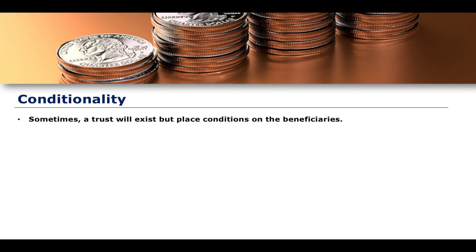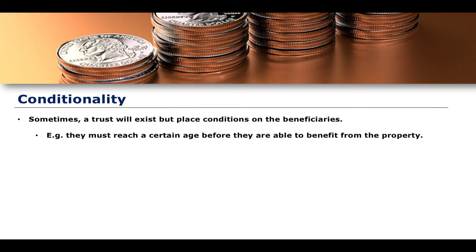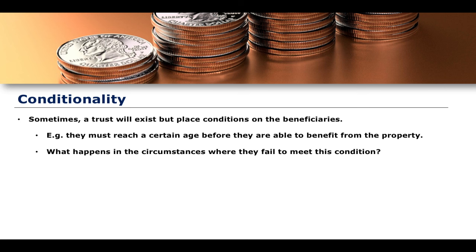A second circumstance in which an automatic resulting trust may arise is through conditionality. Sometimes a trust places conditions on the beneficiaries. For example, if someone is born, people might create a trust for that child, putting money in each month so it builds up into a trust fund such that when they come of age — perhaps 18 — they can benefit from that property. It might even be for a particular purpose, such as helping them buy a car or go to university. This places a condition on the beneficiary: they must reach a certain age before benefiting from the property.